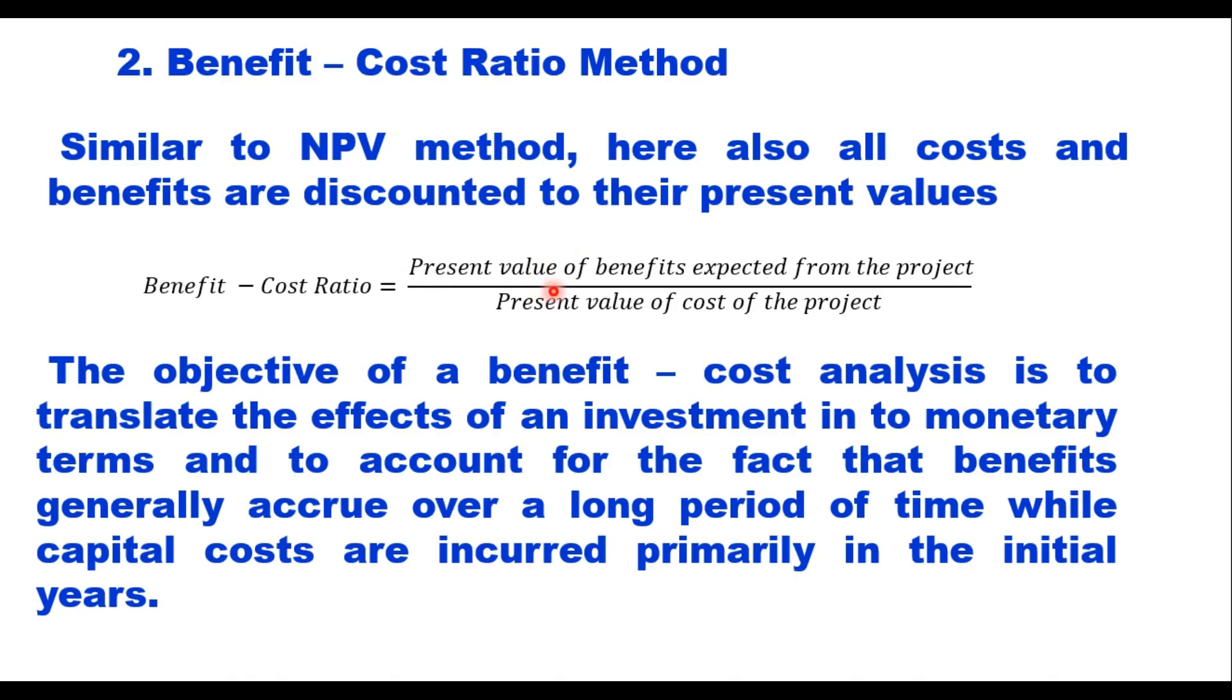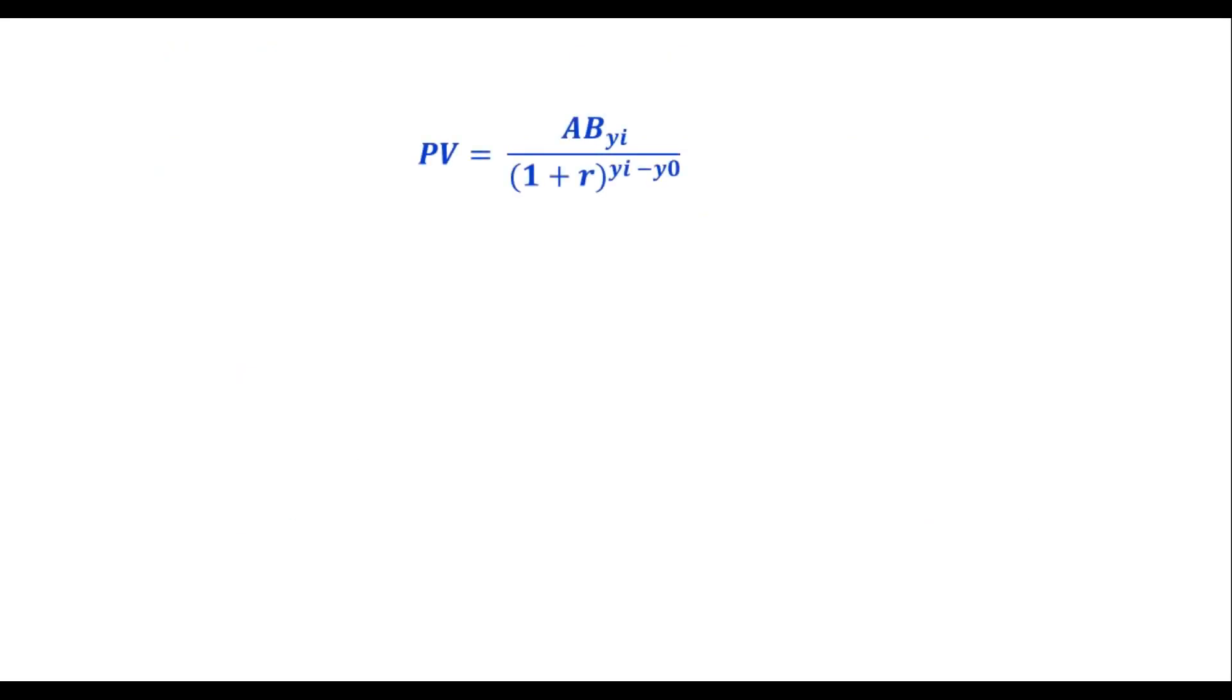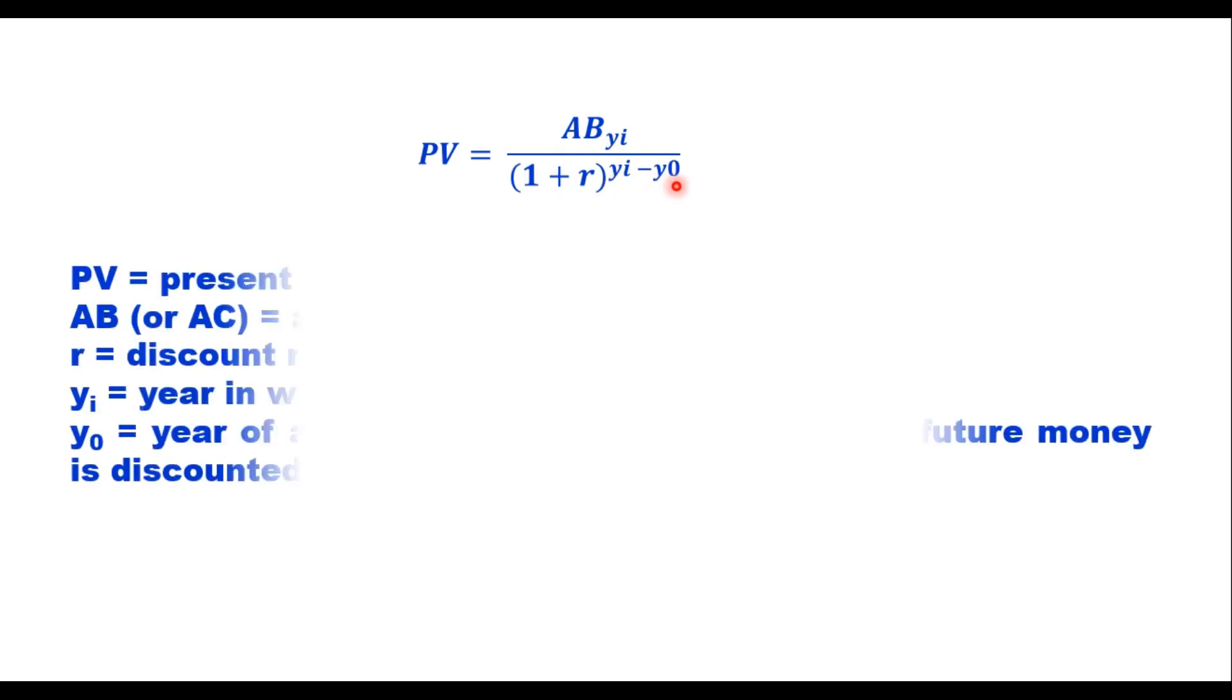The present value of any investment, either annual cost or annual benefit, is given by this equation. Present value is AB_YI upon 1 plus R to the power YI minus Y0. Now here, PV is the present value. AB, or it can be AC also, that is annual benefit or annual cost.